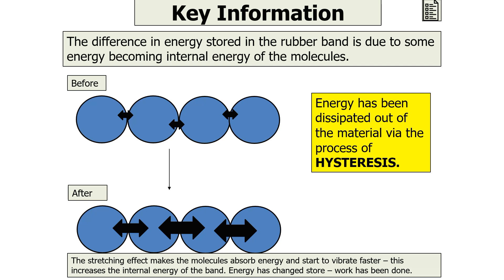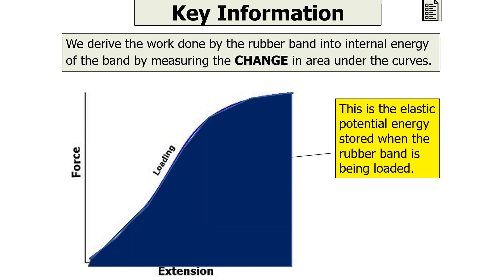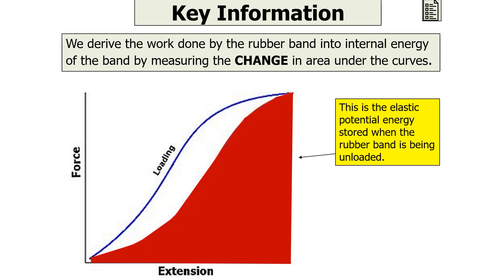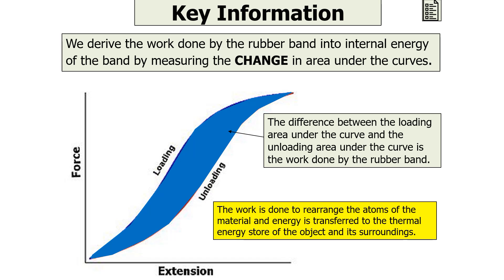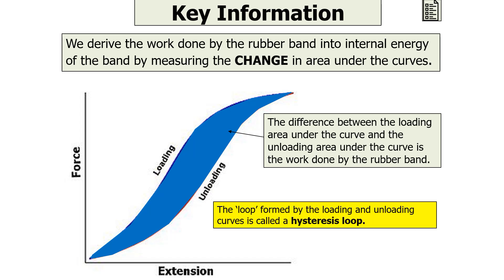We have a name for this energy dissipation out of the material: it's called hysteresis. We can derive the work done by the rubber band into internal energy by measuring the change in the areas under the curves. The area under the loading curve is the elastic potential energy stored when the rubber band is being loaded, whilst the area under the unloading curve is the elastic potential energy stored when unloading. The difference between the loading area and the unloading area is the work done by the rubber band, as work is done to rearrange the atoms and energy is transferred to the thermal energy store of the object and its surroundings.